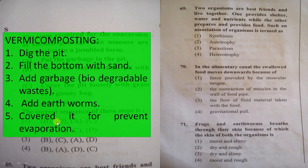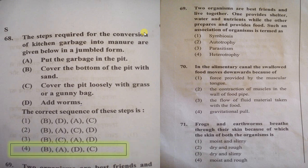Covering is essential — it prevents evaporation and keeps the environment cool, allowing the earthworms to actively convert the garbage into manure. The correct sequence is the fourth option: B, A, D, C — cover the bottom of the pit with sand, put the garbage into the pit, add worms, then cover the bed closely with grass or gunny bag.